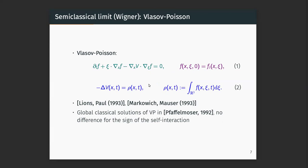What happens with Schrödinger-Poisson under the semi-classical limit? If you use the Wigner method, which I'll explain later, you arrive at Vlasov-Poisson, where a Vlasov equation is coupled to a Poisson equation. The potential V is coupled to the density ρ by a Poisson equation. This limit was famously proved by Lions and Paul in 1993, simultaneously with Markowich and Mauser, using Wigner methods.